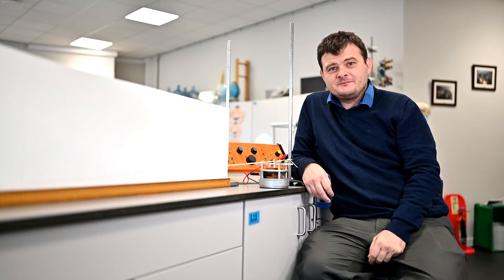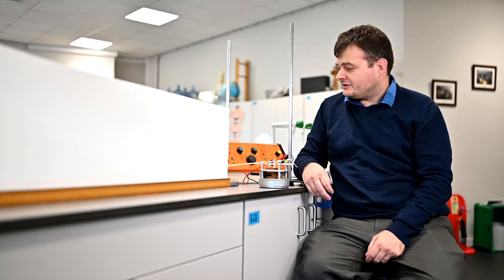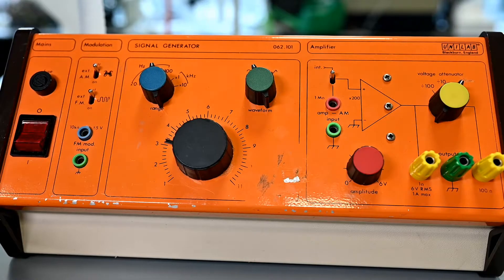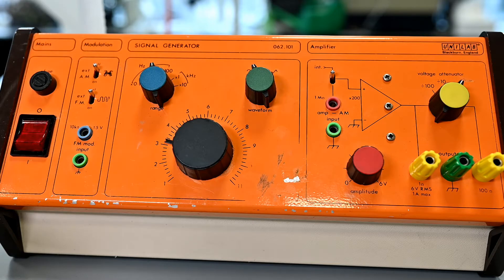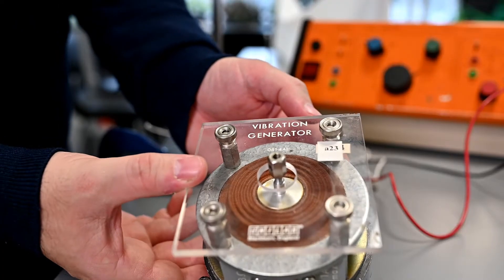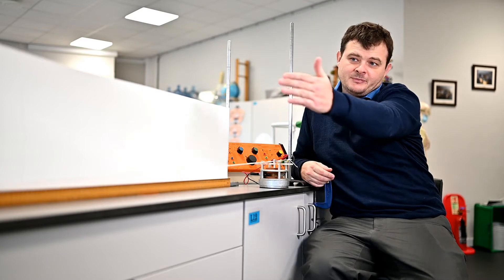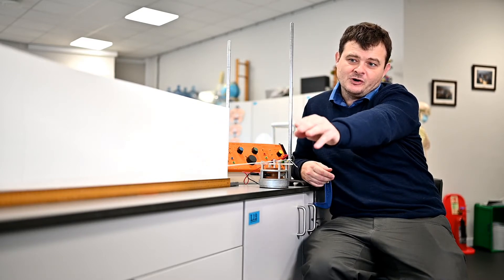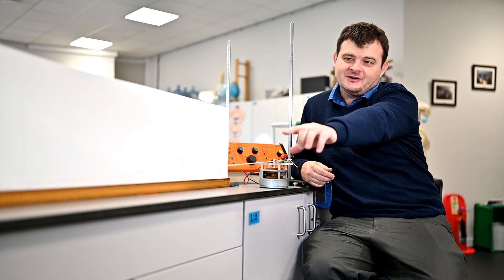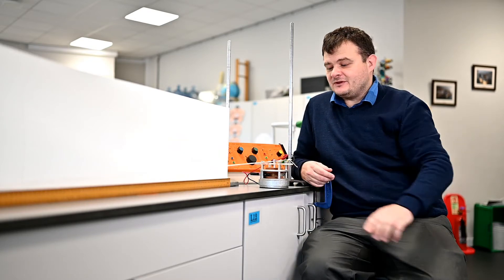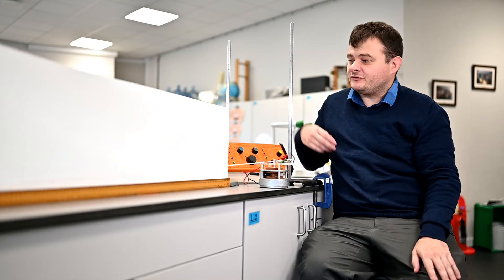If you would like to do this demonstration, you need a signal generator. I've got one of these orange Unilab units here. You need a vibration generator, a piece of string. I've got this set up along a bench here with a bench pulley over there that I'll show you in a moment, with some weights on the end, some masses I should say, that are going to provide tension in this string.